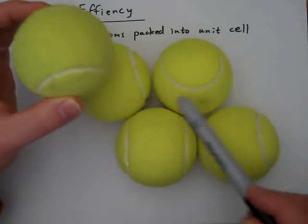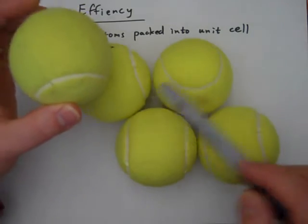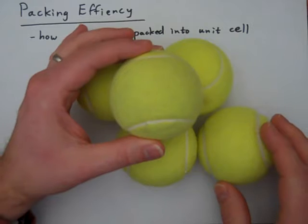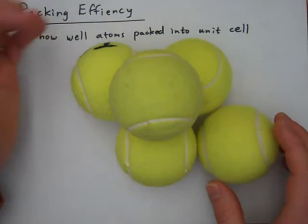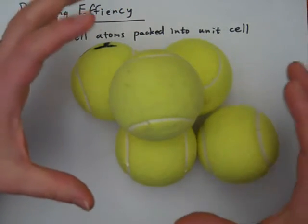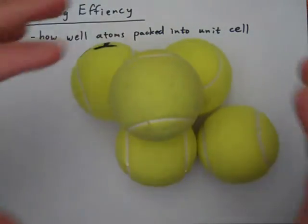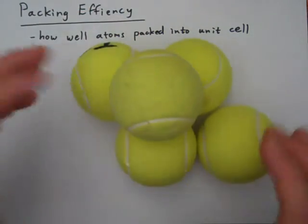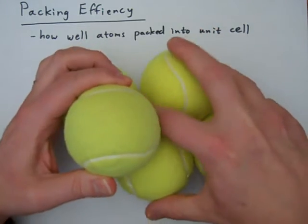then I want to fill in a little bit of this empty space right here. I could do that by putting this tennis ball in this little depression that's formed right here between the other three tennis balls, like that. And so that arrangement will be a little bit more tightly packed, a little more efficient in the packing than the previous arrangement.